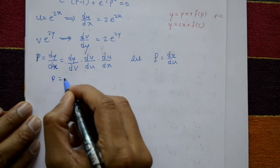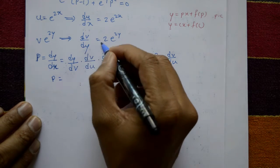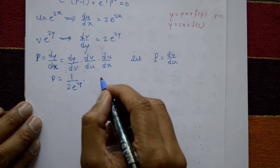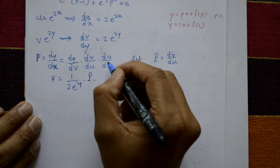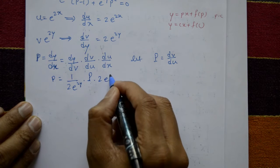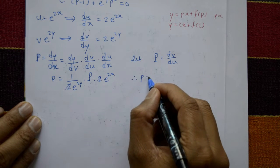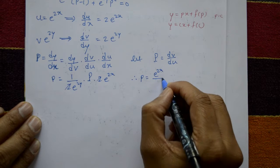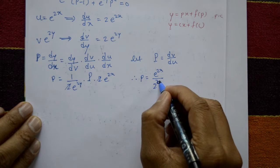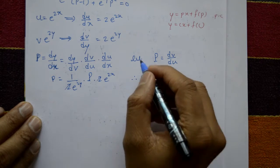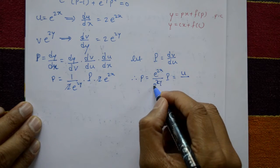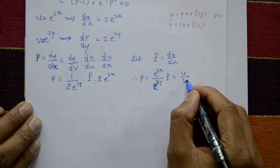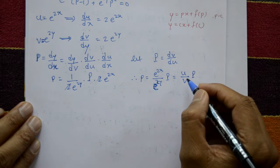Small p equals dv/dy times dv/dy, meaning 1 upon 2 into e raised to 2y, times capital P, times du/dx which is 2 into e raised to 2x. The 2s cancel. Therefore, small p equals e raised to 2x upon e raised to 2y into capital P, which is u divided by v into capital P.